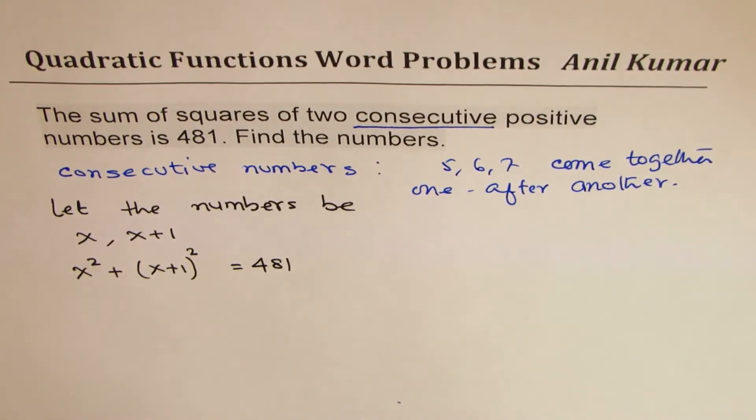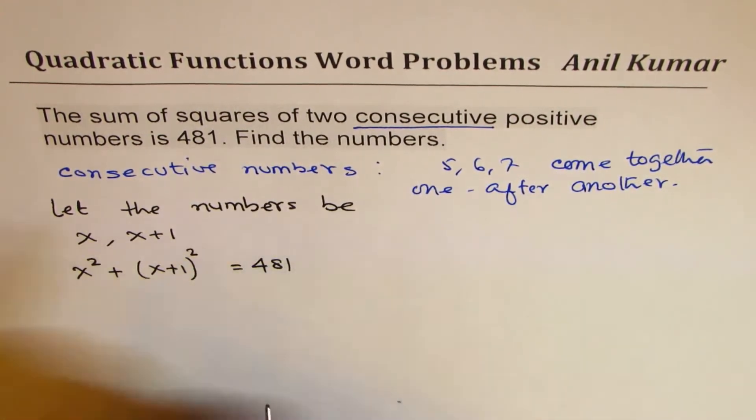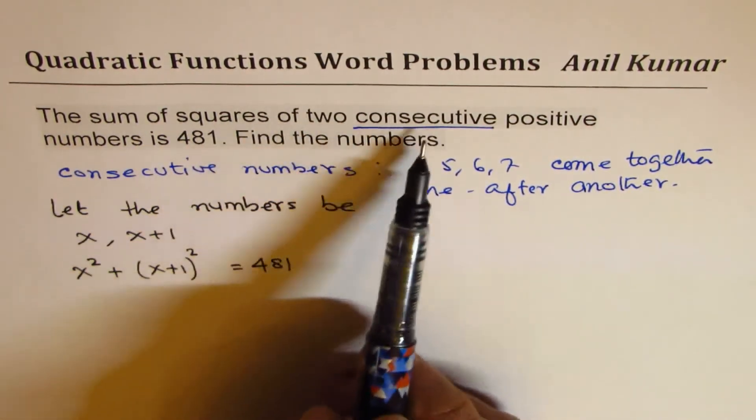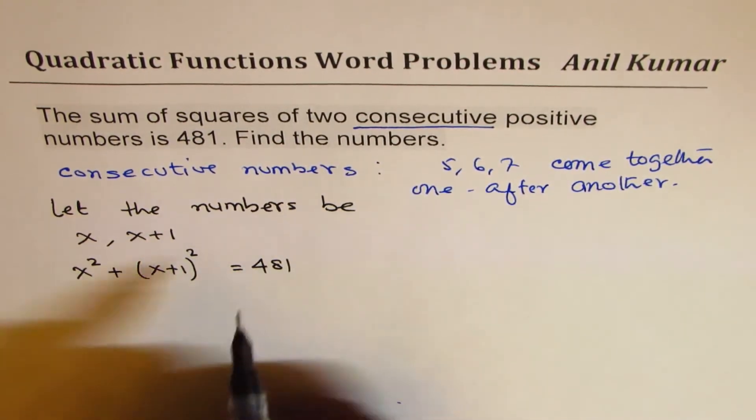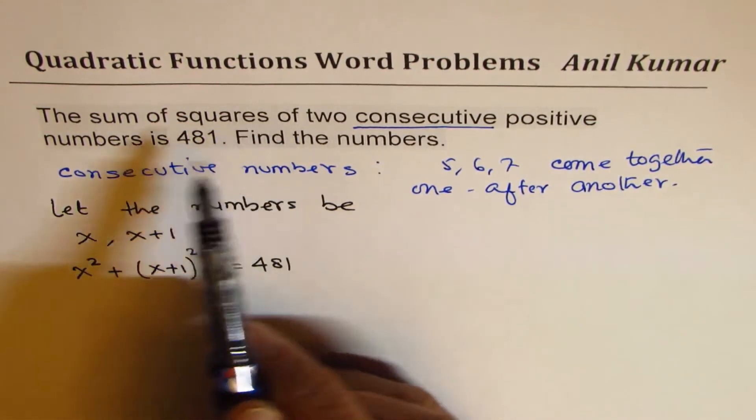This is the first part: defining the variables, getting the equation. And now it's completing the squares or whatever. The sum of squares of two consecutive positive numbers - find the numbers. So when you find these numbers, there are different methods. You could use quadratic formula also, and you could use factoring.